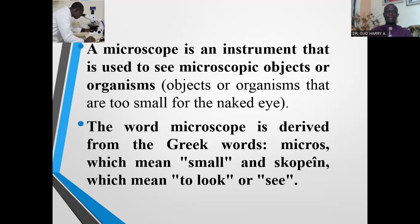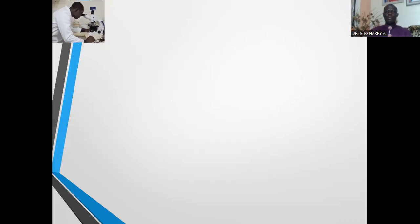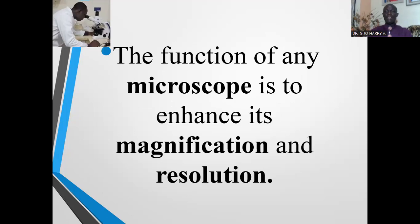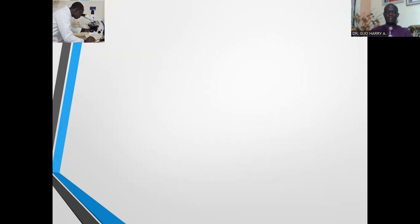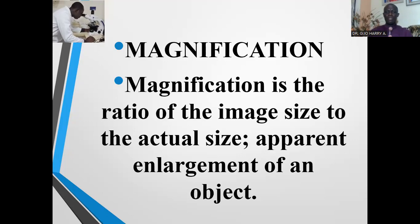The instrument used to see these organisms is called a microscope. The function of a microscope is to enhance magnification and resolution. What is the meaning of magnification? Magnification is the ratio of the image size to the actual size of the object.